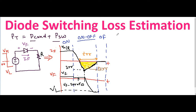Now let's do some math to find the switching losses. QRR equals one-half times TRR times IRR. This comes from the area of a triangle — one-half times base times height — where the base is TRR and the height is IRR. So QRR = ½ × TRR × IRR.